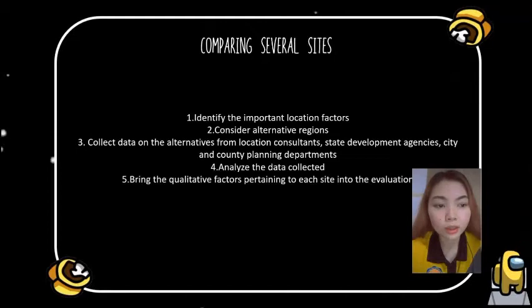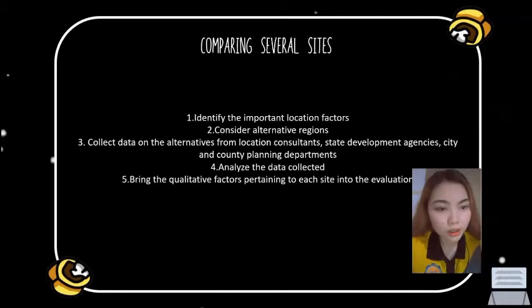To merge quantitative and qualitative factors, some managers review the expected performance of each factor, while others assign each factor a weight of relative importance and calculate a weighted score for each site using a preference matrix. The main factors that affect location decision include regional factors, community consideration, and site-related factors.